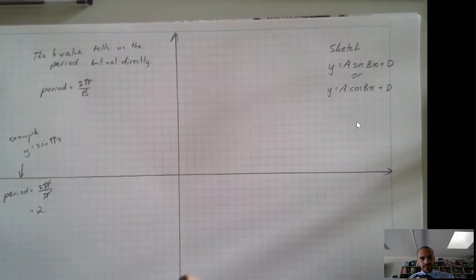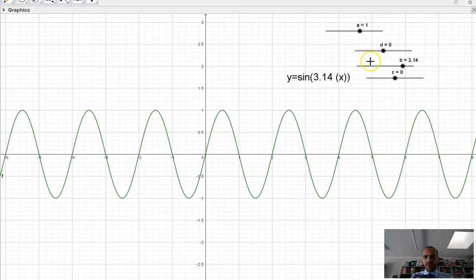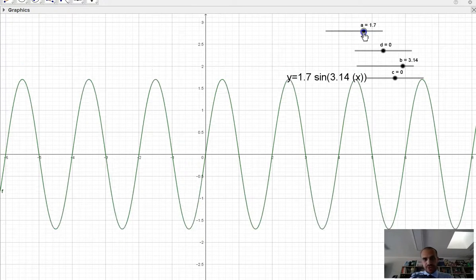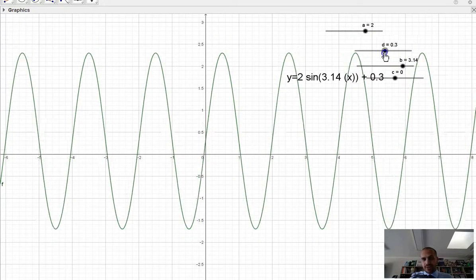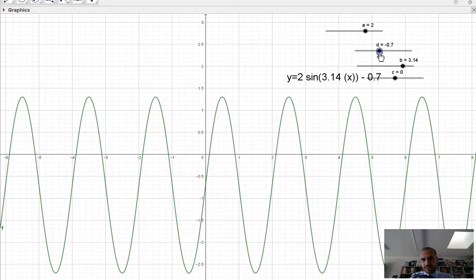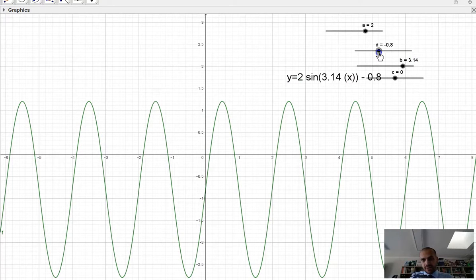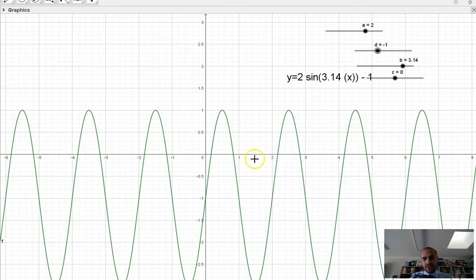Before we do, though, let's complicate matters by adding in an a value, which changes the amplitude, and a d value, which moves things up and down. Now, if we do something like this, we can see three things.